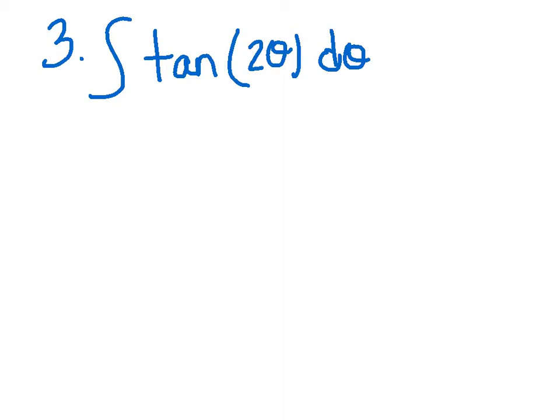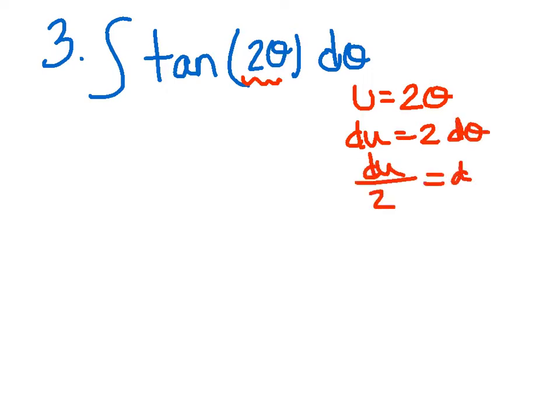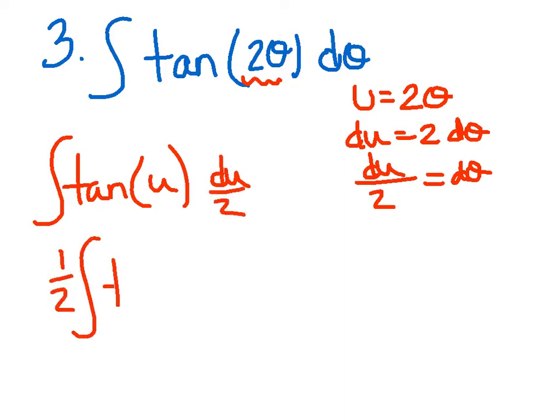Alright, number three. The integral of tangent of 2 theta d theta. Now, I'm going to do it the long way, but here's where the memorizing the integral of tangent would come in very handy. So, take your time on this one. I've got to pick a u for my u sub, so I'm going to pick 2 theta. That's what's in the parentheses. So, my du equals 2 d theta, and of course, I get du over 2. So, I've got my integral tangent of u, du over 2. I'm going to pull out a one-half integral tangent of u.